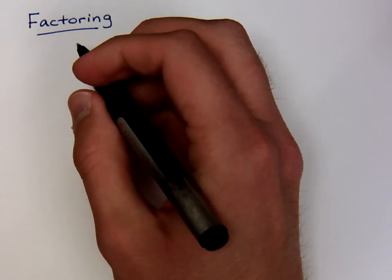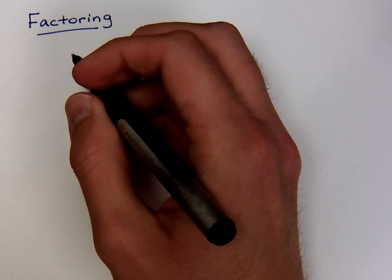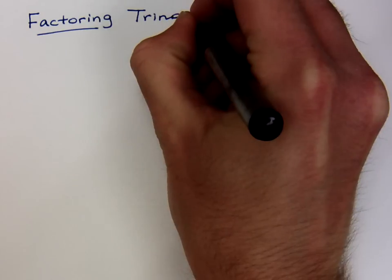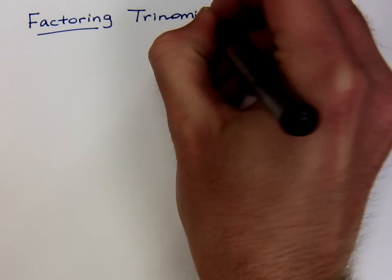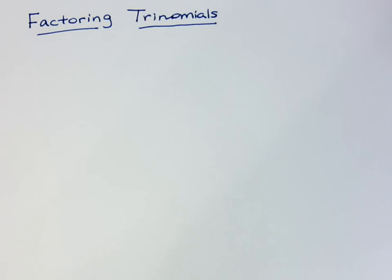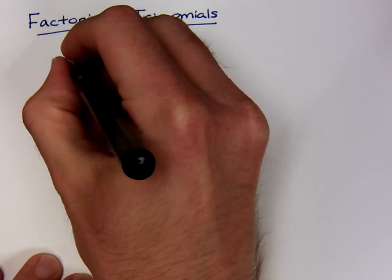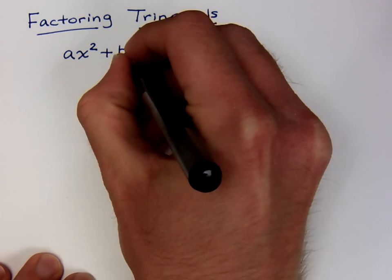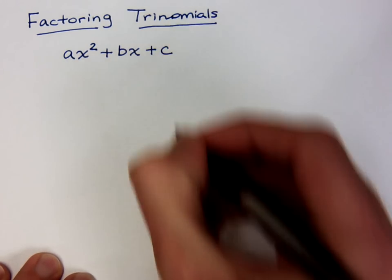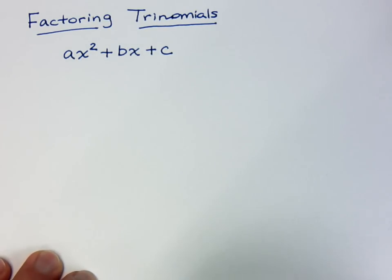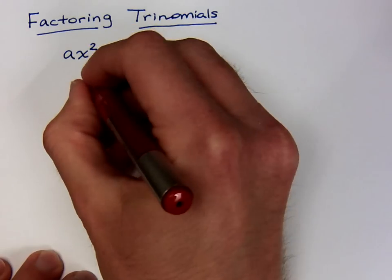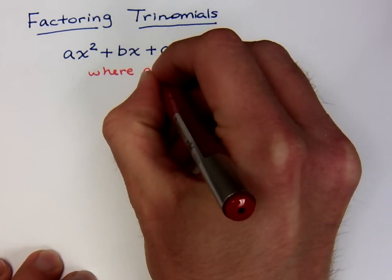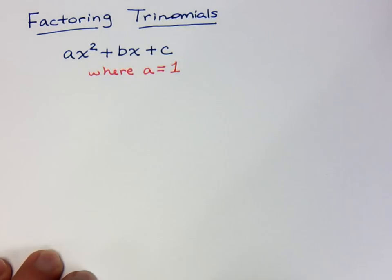In this video, we want to look at factoring, continuing our series that we started before. In this case, we want to look at factoring trinomials. Remember that a trinomial is just a polynomial that has three terms. Your most basic trinomial is of this form: ax squared plus bx plus c. The most basic form of this is when that lead coefficient for x squared is equal to 1.